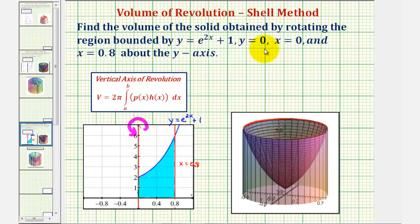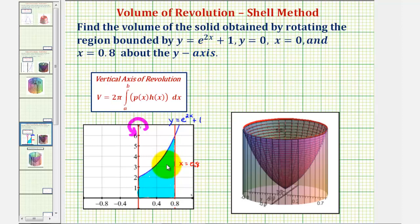We want to find the volume of the solid obtained by rotating the region bounded by y equals e to the power of two x plus one, graphed here in blue, x equals zero, which is the y-axis, and x equals 0.8, which is this vertical line here. This region is rotated about the y-axis. This blue region here is the bounded region, and if we rotate it about the y-axis, it creates this solid. Our goal is to find the volume of this solid.